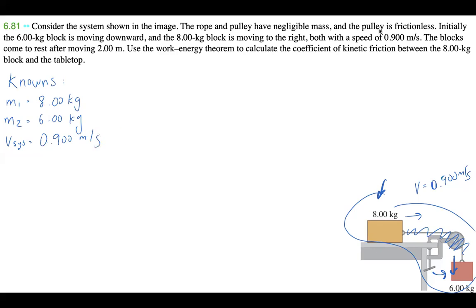Both are moving for 2.00 meters before they come to rest. Oh, that's my brownies. My brownies are going to have to wait because I'm not paying extra for Zoom. They're moving 2.00 meters, so we have to use the work-energy theorem to calculate the coefficient of kinetic friction between the 8.00 kilogram block and the tabletop.